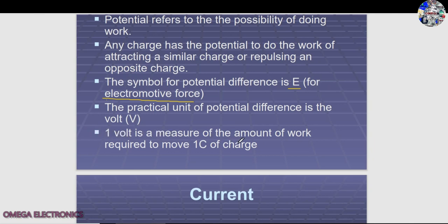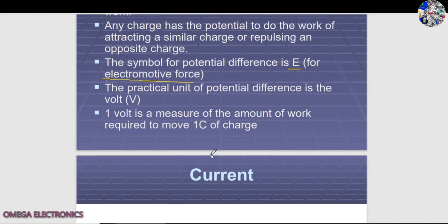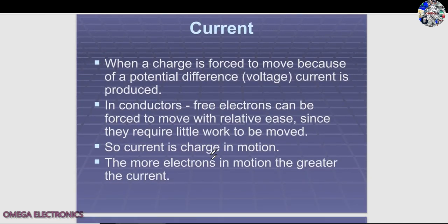When a charge is forced to move because of a potential difference V, current is produced. In conductors, free electrons can be forced to move with relative ease since they require little work to be moved. The electrons present in conductors are freely movable and can be moved with a small force provided by the potential difference, resulting in the flow of current.